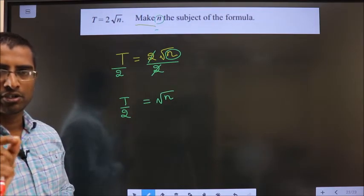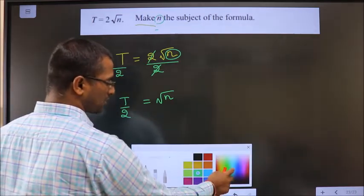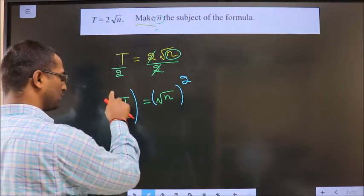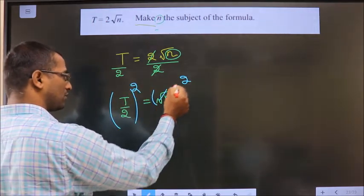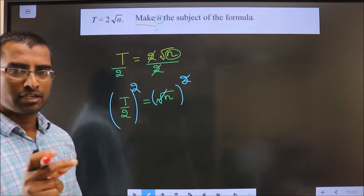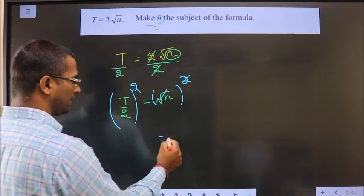To remove the square root on n, what we should do is take square on both sides. If I do square on both sides, then square root and square get cancelled, leaving us with n.